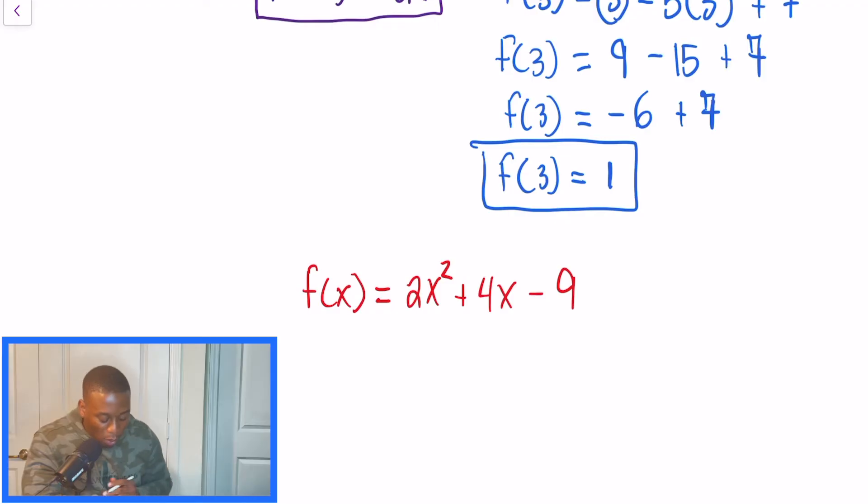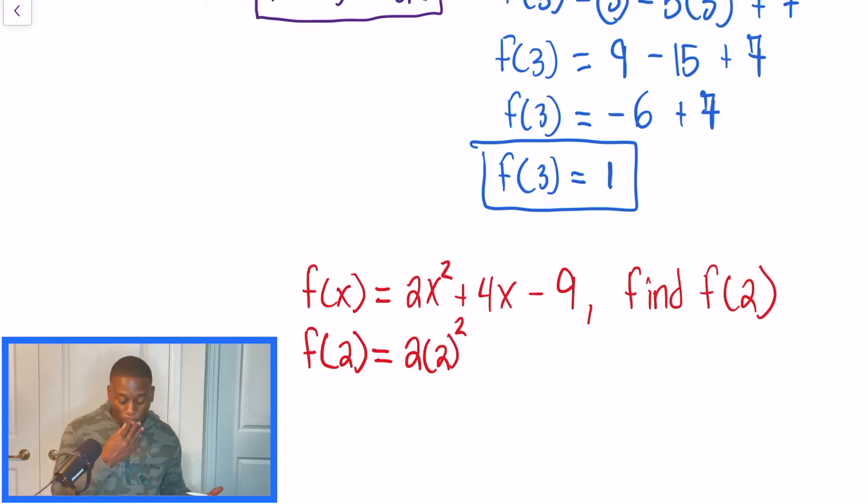So we want to find f of 2. We're saying that when our input is 2, what will the output be in this function? So step one, we're going to plug those values in. After we do that, let's see what we're going to get. Let's make sure this is correct. All right. So we substituted, we plugged everything in.